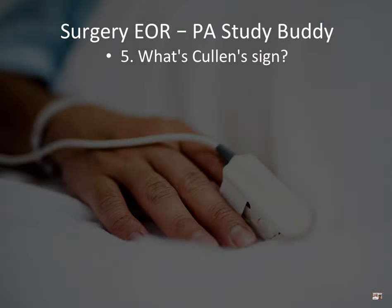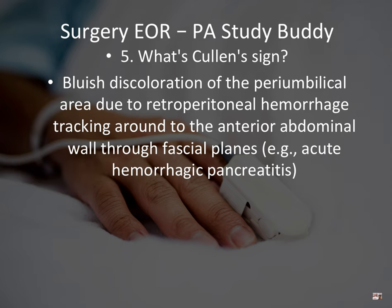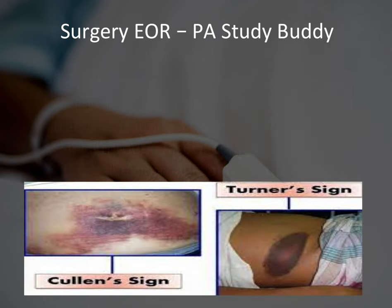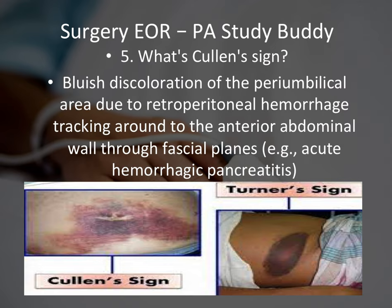Question number five: what is Cullen's sign? Cullen's sign is a bluish discoloration of the periumbilical area due to retroperitoneal hemorrhage tracking around the anterior abdominal wall through the fascial planes. This is seen in acute hemorrhagic pancreatitis. To differentiate: Turner's sign has the word 'turn' in it — turn to the side — so Turner's is side bruising, while periumbilical bruising is Cullen's sign.